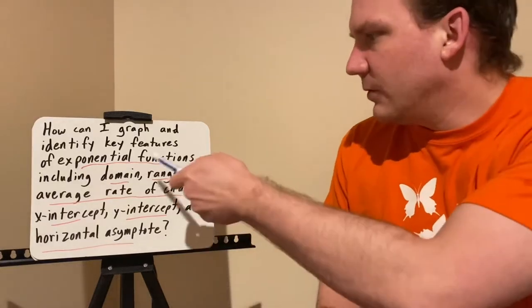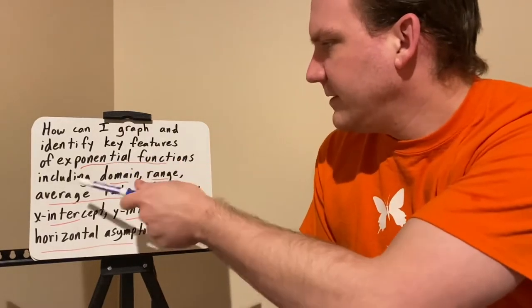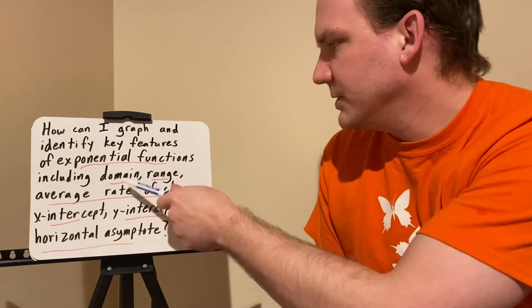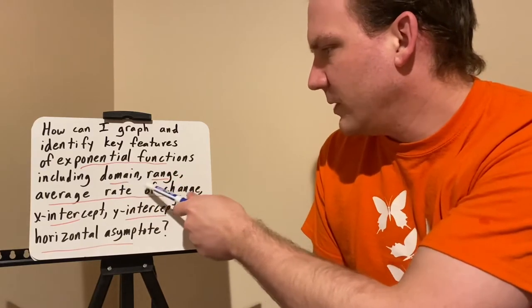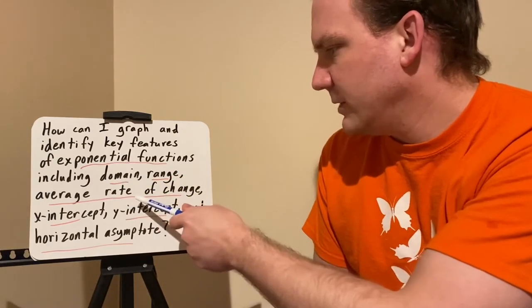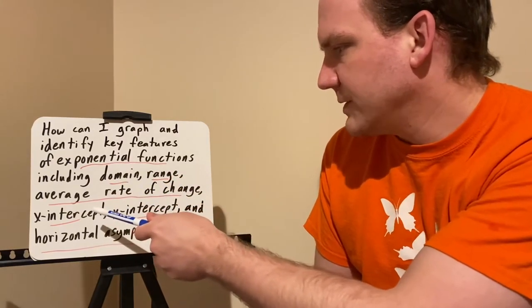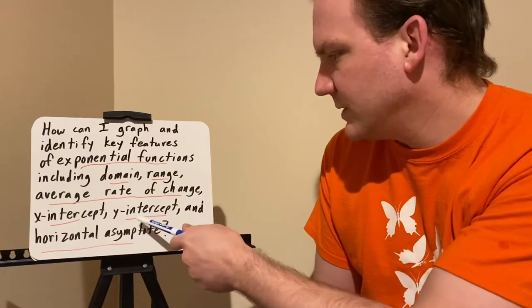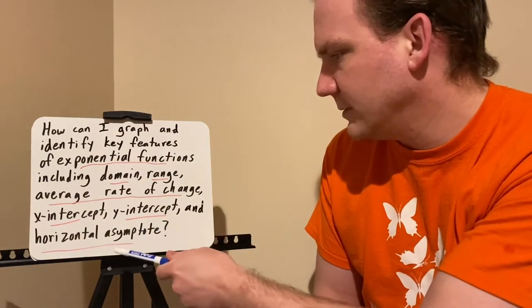How can I graph and identify key features of exponential functions, including domain, range, average rate of change, y-intercept, x-intercept, and horizontal asymptote?